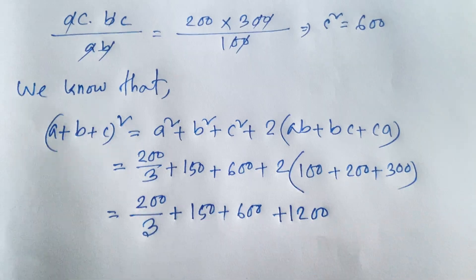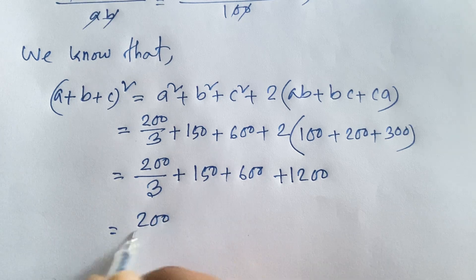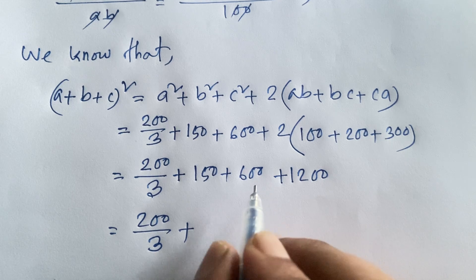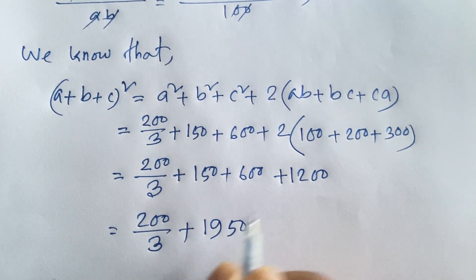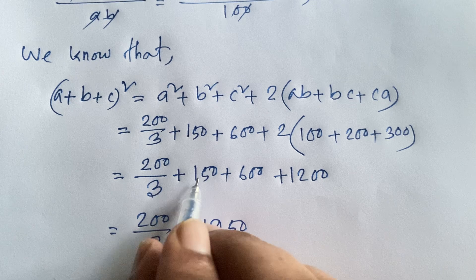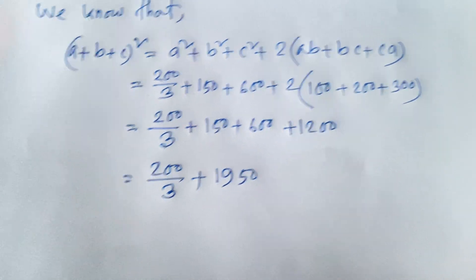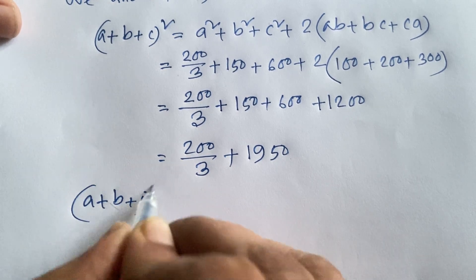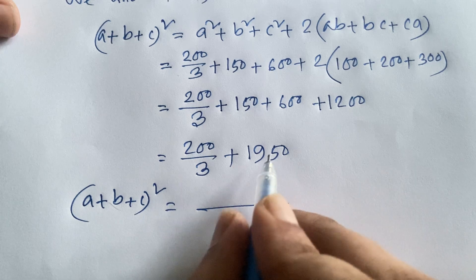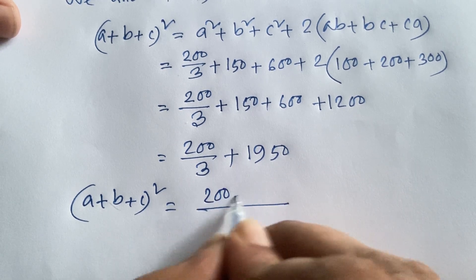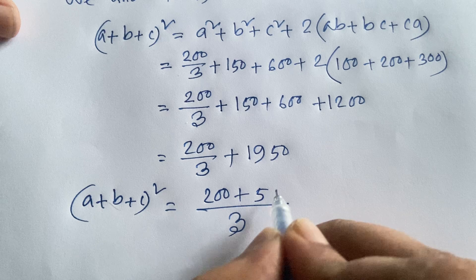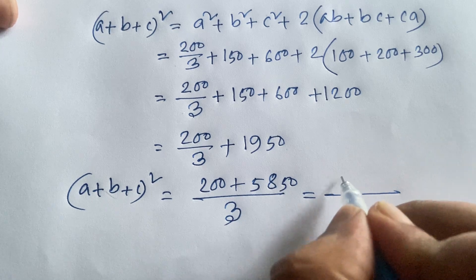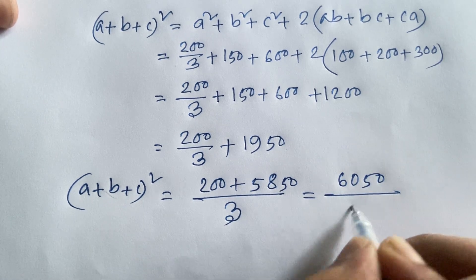Combining the terms: 150 plus 600 plus 1200 equals 1950. So (a+b+c)² equals 200/3 plus 1950, which equals 200/3 plus 5850/3, giving 6050/3.